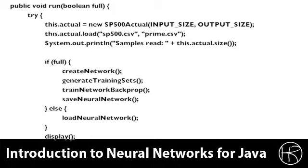If we're doing a full training run, then we need to create a neural network, which will create a neural network with the specified number of hidden layers and neurons and input and output specified by the configuration file, and we will then generate the training sets. We'll generate the training sets based on the data that we actually loaded up higher when we loaded the S&P 500 CSV and the prime data CSV.